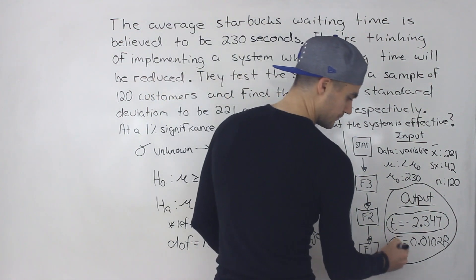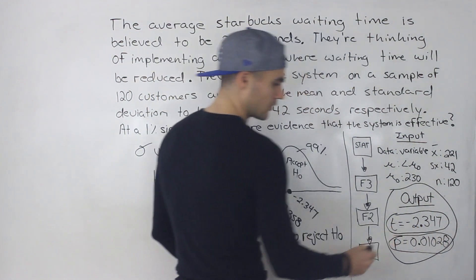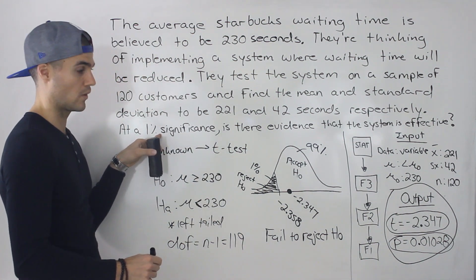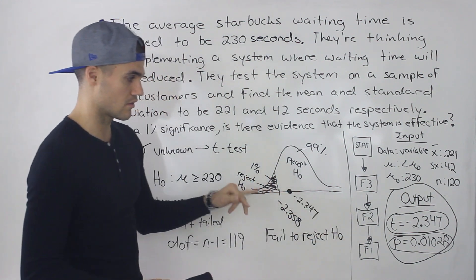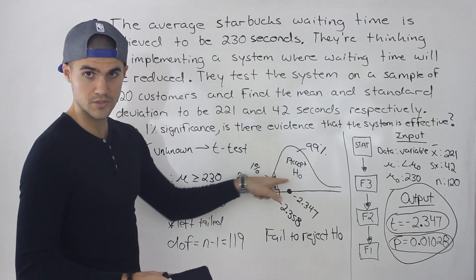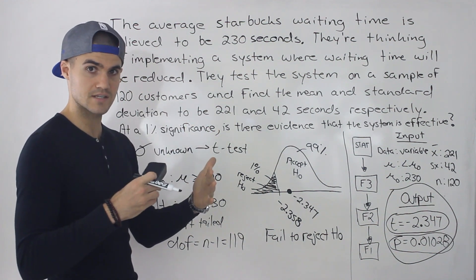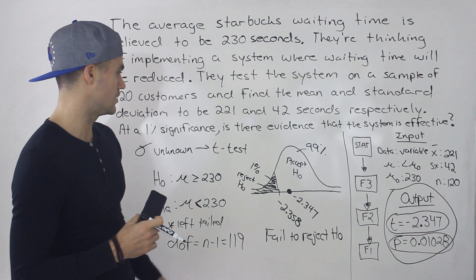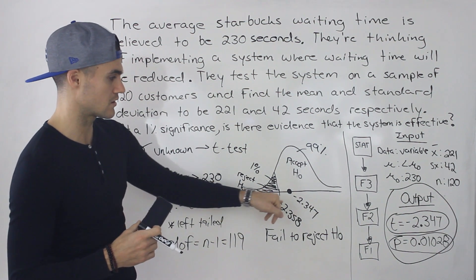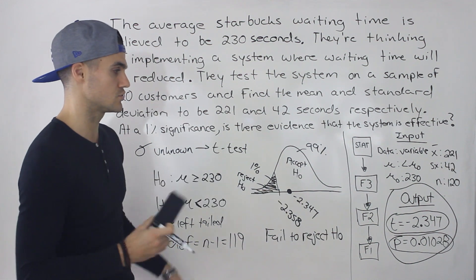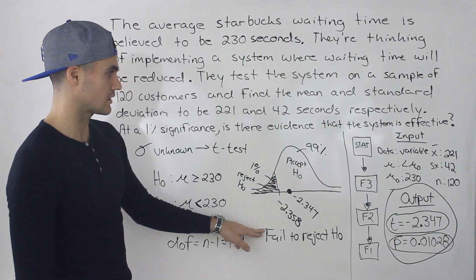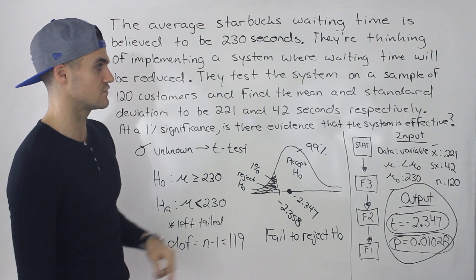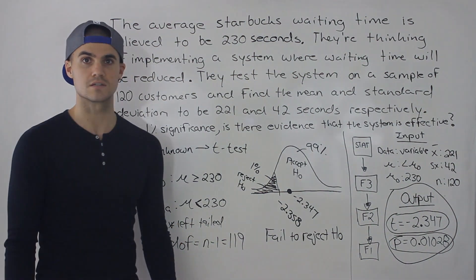Looking at the p-value: if the p-value is greater than the significance level of 0.01, we fail to reject the null. If it's less, we reject. The p-value here is greater than 0.01, so we fail to reject the null hypothesis — the same conclusion either way. Therefore, there is not enough evidence that the new system is effective in reducing the Starbucks waiting time.